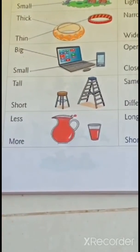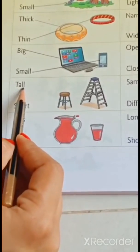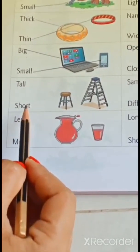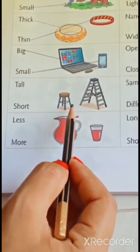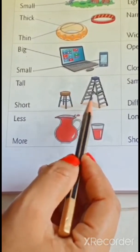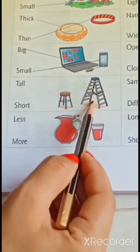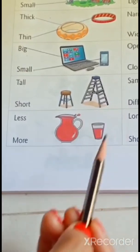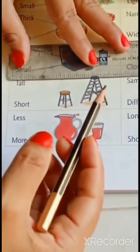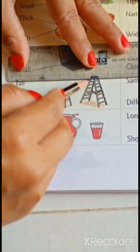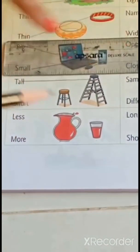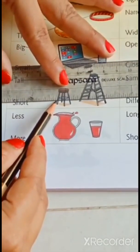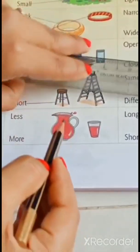Next. T-H-L-L tall and S-H-O-R-T short. Here, two tables are given here. So, which table is tall? This one or this one? Yes. This table is tall. So, join T-H-I-L-L tall with tall table. And S-H-O-R-T short with short table.